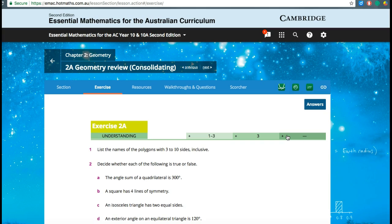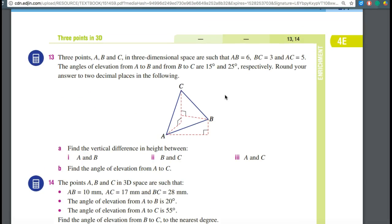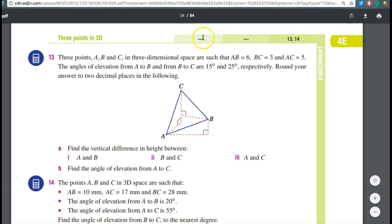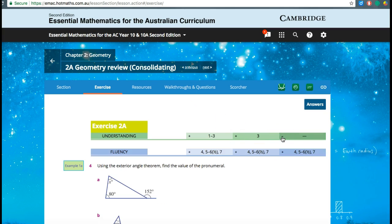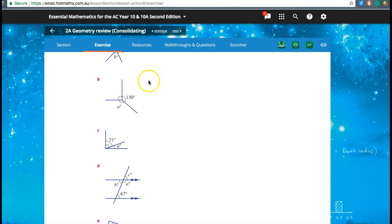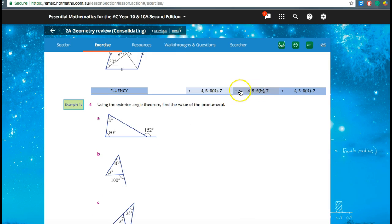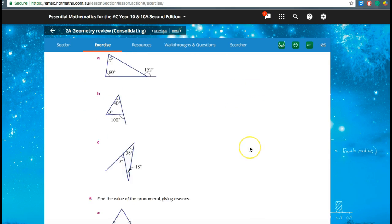Kids who are flying through and find the basics of this quite easy and just want to get on to the problem solving to really test their skills, they should focus on this last column here. In the textbook it looks like this: easy, medium, hard. On the actual ebook, if you click this it will actually select out only the problems that that student really needs to be doing at their skill level and delete anything they don't need to see.